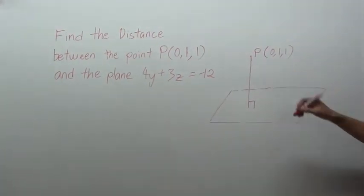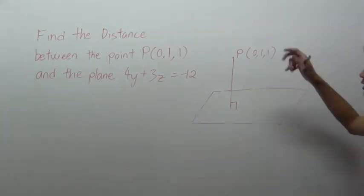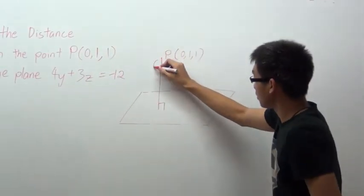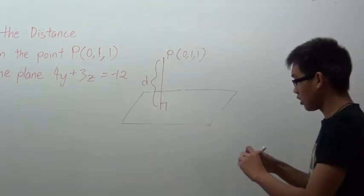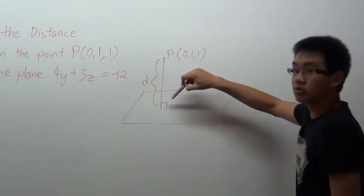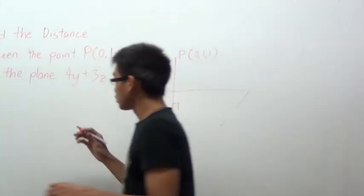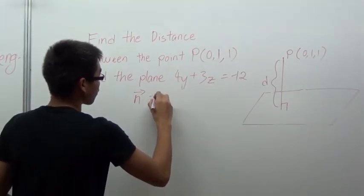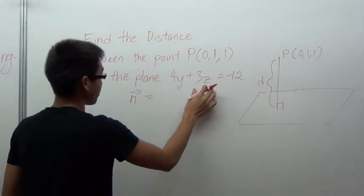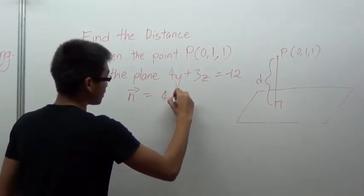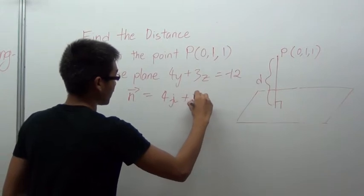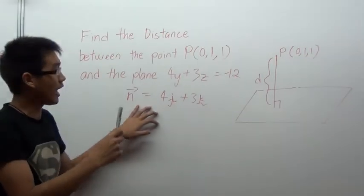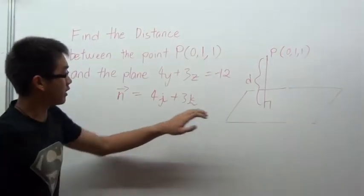Let's say point P is here. When we want to find the distance, we're talking about the perpendicular distance from P down to the plane — which is this distance here. Now we have to find the direction of P pointing to the plane. To find the direction, we can find it with the normal of the plane. We can get the normal from the equation of the plane. From the equation, we can say the normal is 4j + 3k.